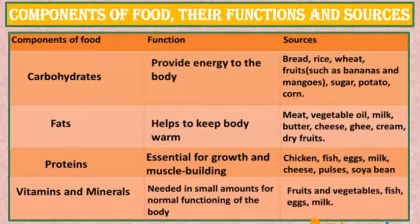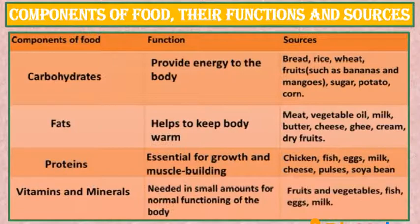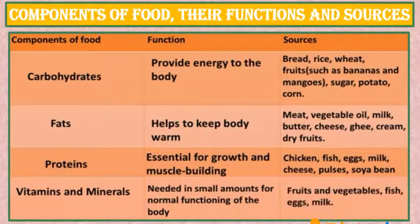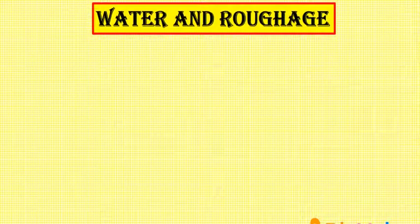The last main components our body needs are vitamins and minerals. They are needed in small amounts for the normal functioning of the body and they also help to fight diseases and prevent us from falling sick. We can get vitamins and minerals from fruits and vegetables, fish, eggs and milk.